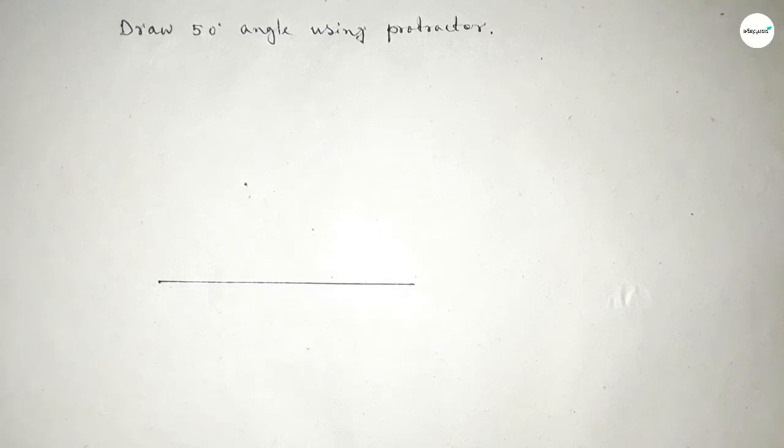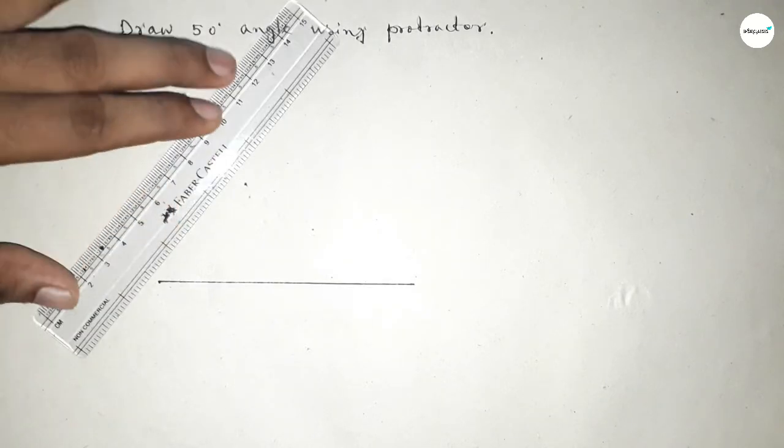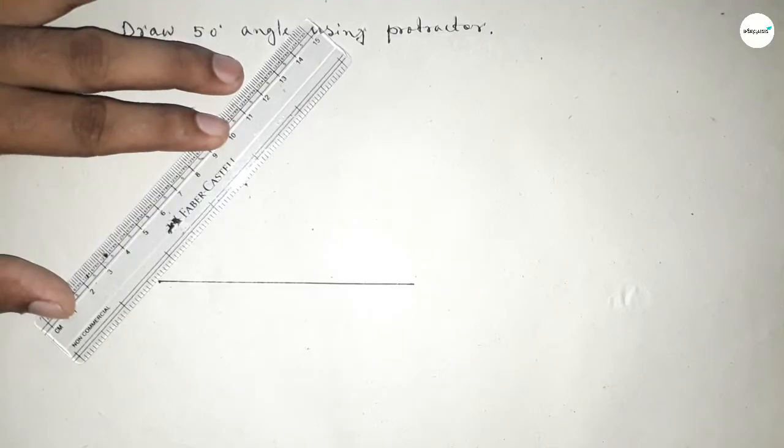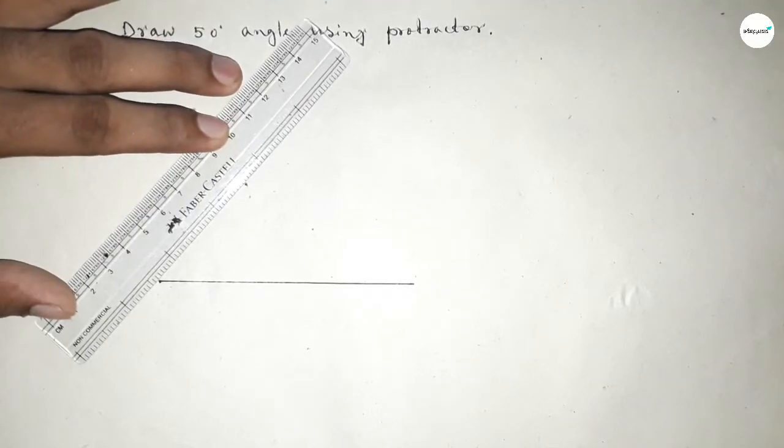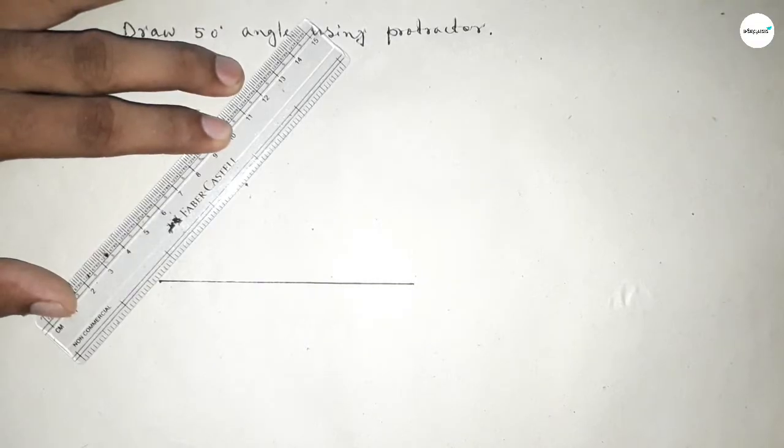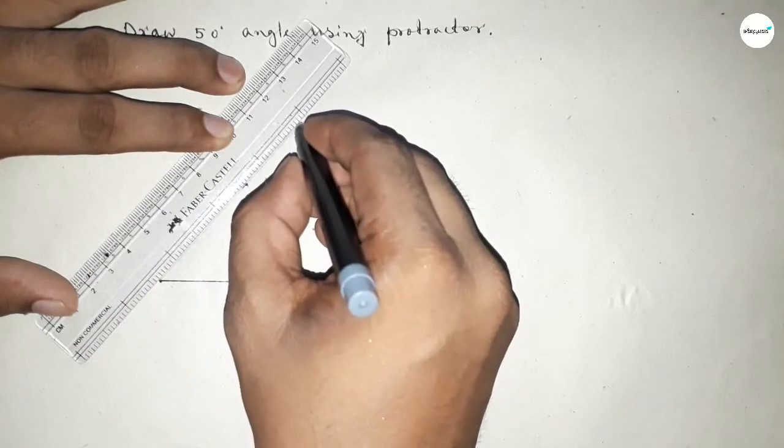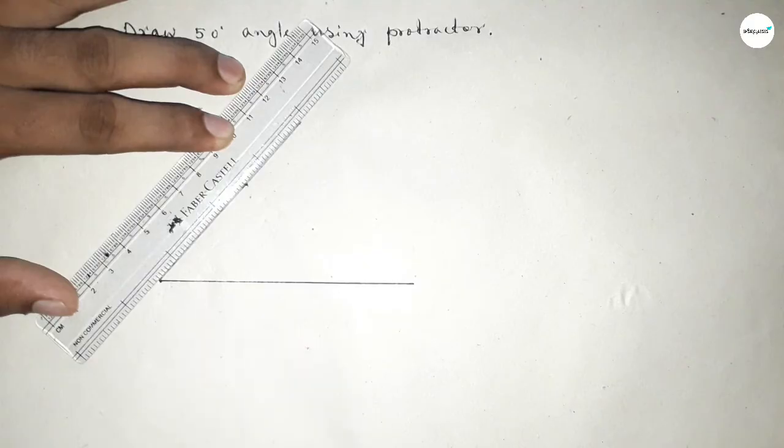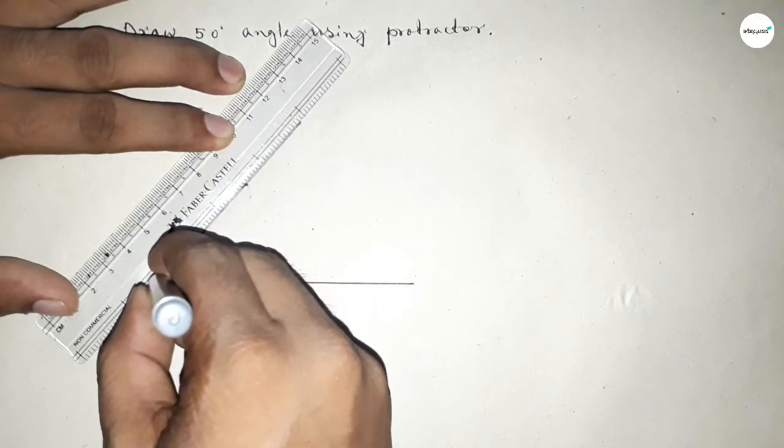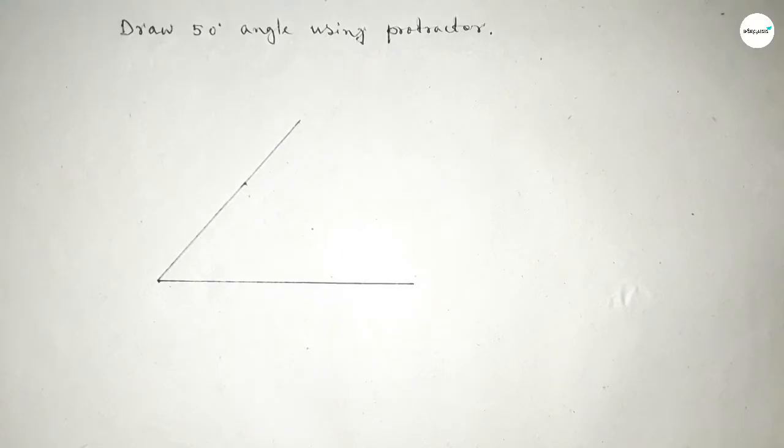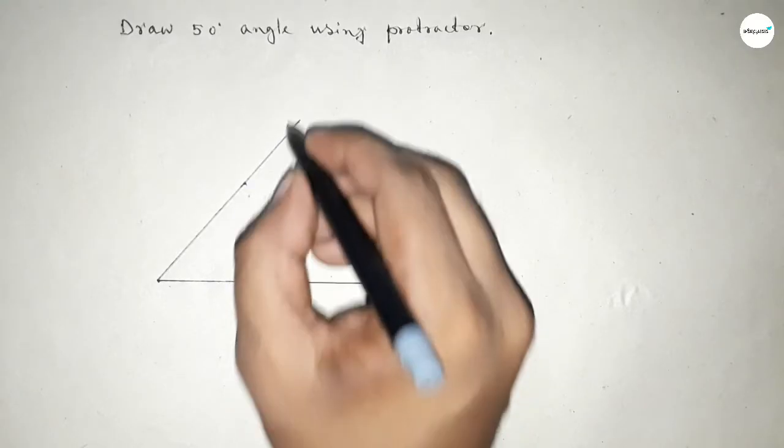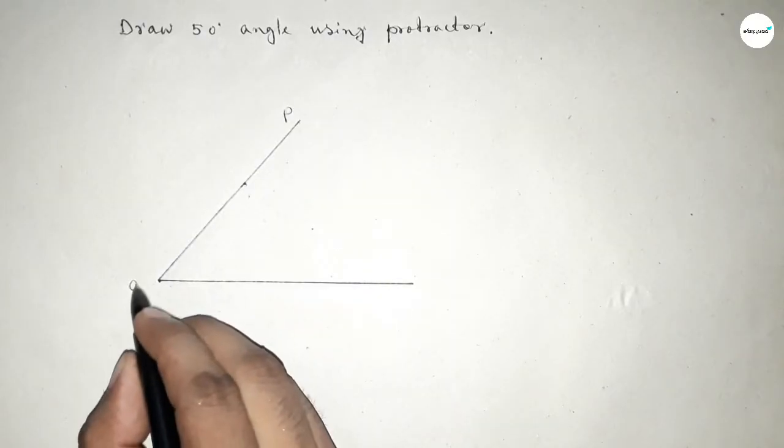Now joining this side to get 50 degree angle. So first we have to join this to get 50 degree angle. So we got by joining this 50 degree angle. Okay, so this is P, this is Q, and this is R.